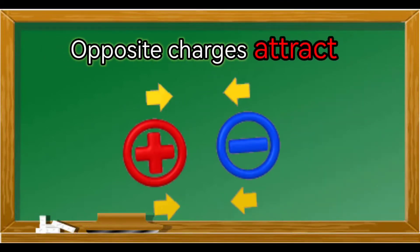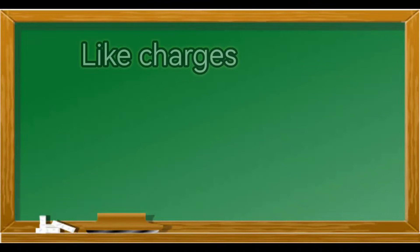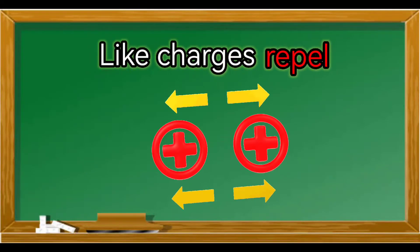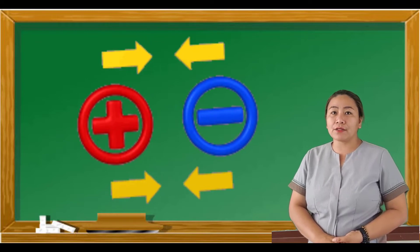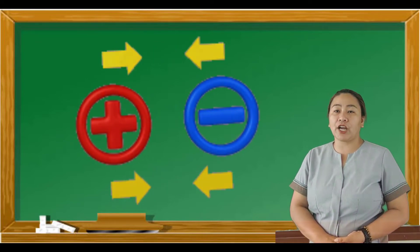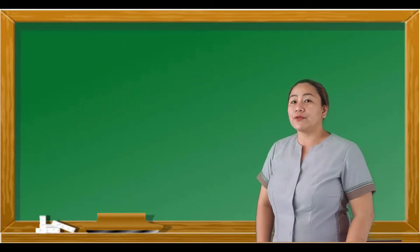Opposite charges attract. Like charges repel. To charge an object, one must alter the charge balance of positive and negative charges. There are three ways to do it: Friction, conduction, and induction.